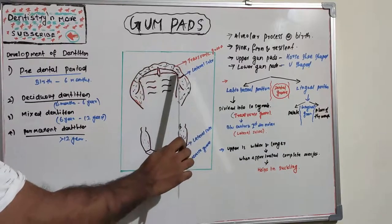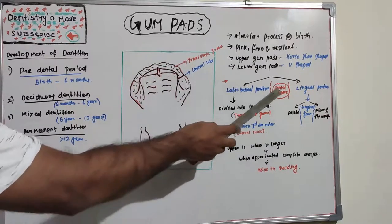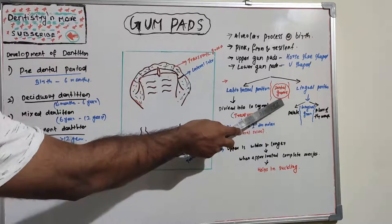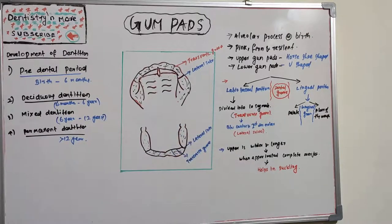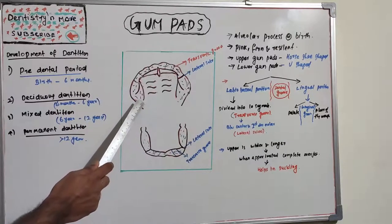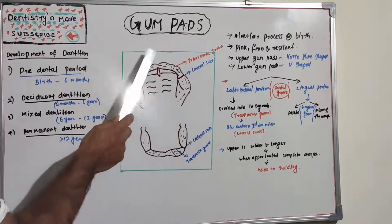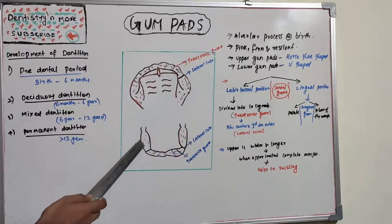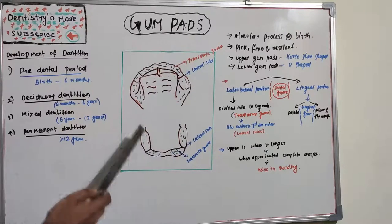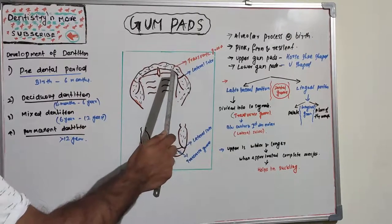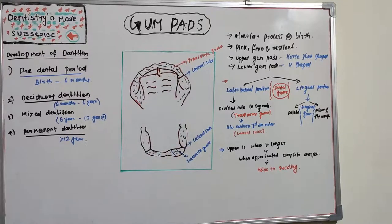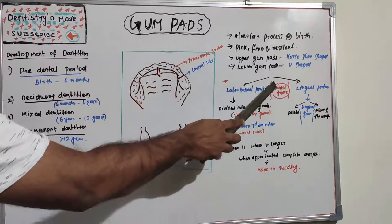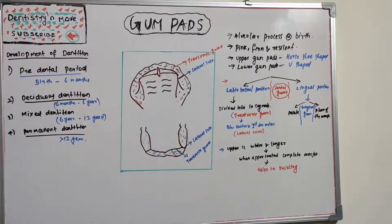The labio-buccal portion and the lingual portion are divided by something known as the dental groove. The shape of the gum pad is horseshoe-shaped in the upper arch and U-shaped in the lower arch. It is basically divided into labio-buccal and lingual portions separated by the dental groove.